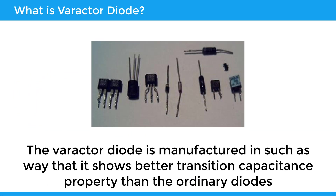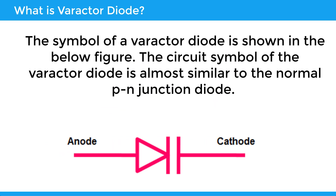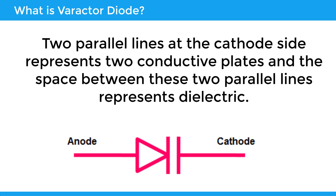The varactor diode is manufactured in such a way that it shows better transition capacitance property than the ordinary diodes. The circuit symbol of the varactor diode is almost similar to the normal PN junction diode. Two parallel lines at the cathode side represent two conductive plates, and the space between these two parallel lines represents the dielectric.